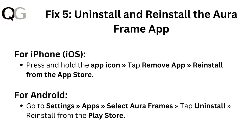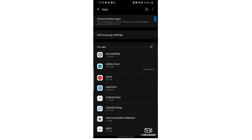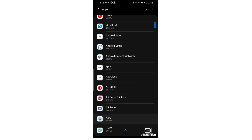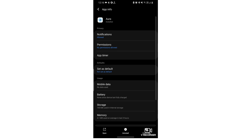Fix 5: Uninstall and reinstall the AuraFrame app. For iOS (iPhone), press and hold the app icon, tap Remove App, and reinstall from the App Store. For Android, go to Settings, then Apps, select AuraFrames, tap Uninstall, then reinstall from the Play Store.